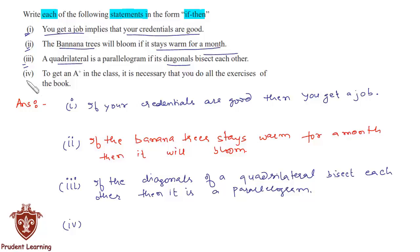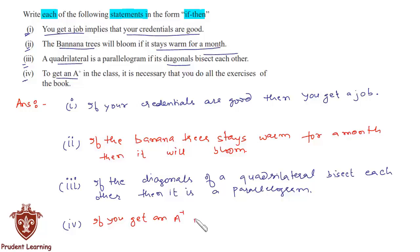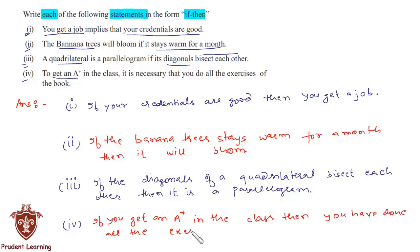Now the last section: 'To get an A plus in the class, it is necessary that you do all the exercises of the book.' We can rewrite it as: 'If you get an A plus in the class, then you have done all the exercises of the book.' So this completes our solution. Let us see the next question.